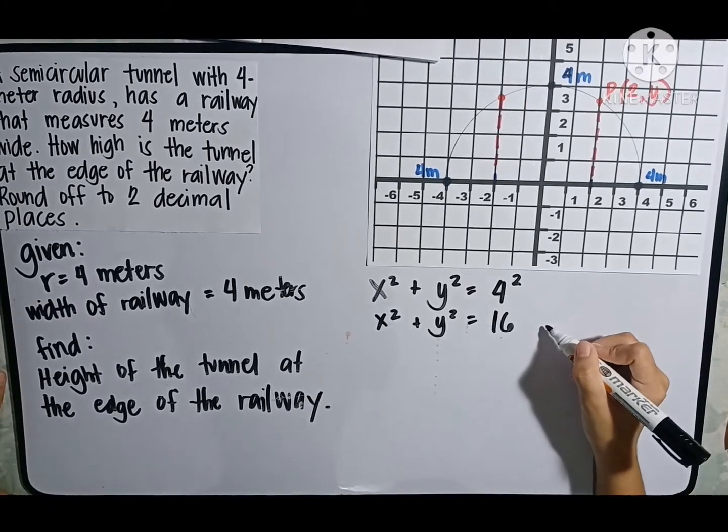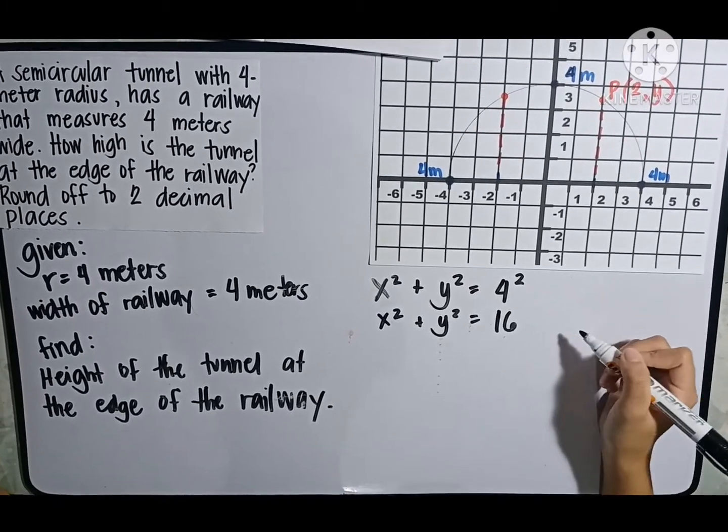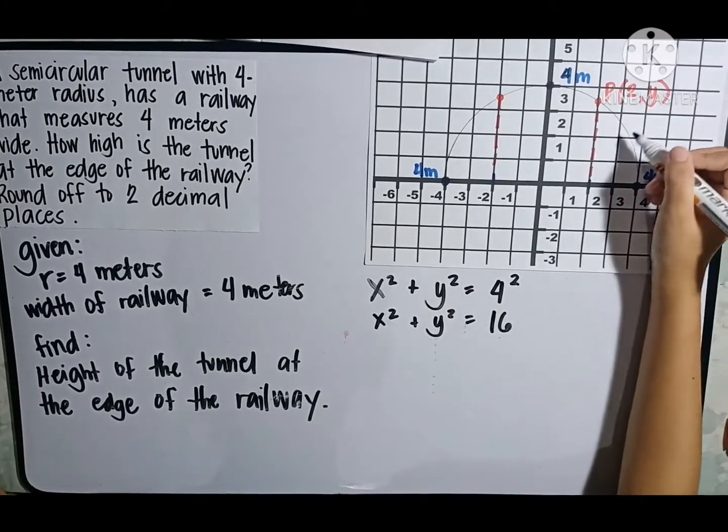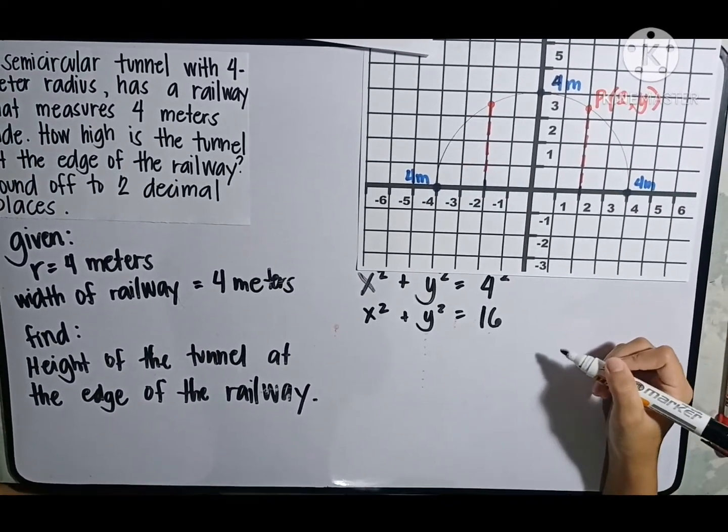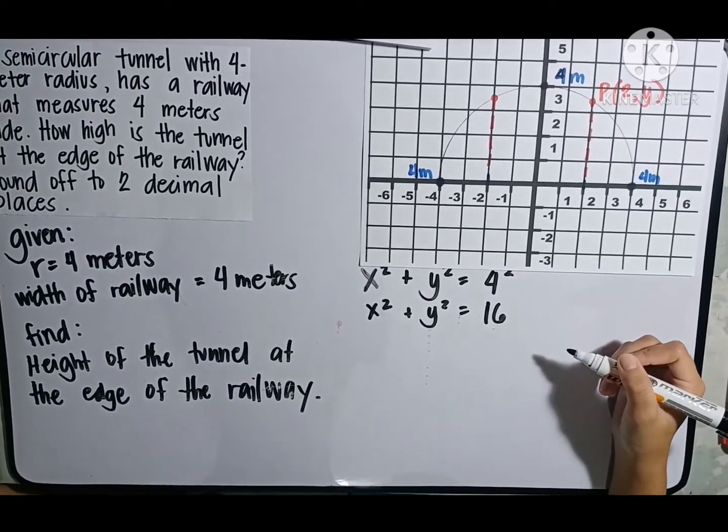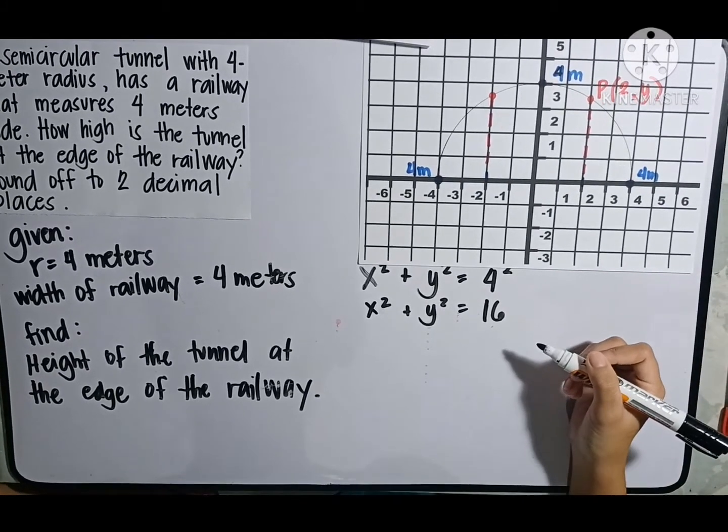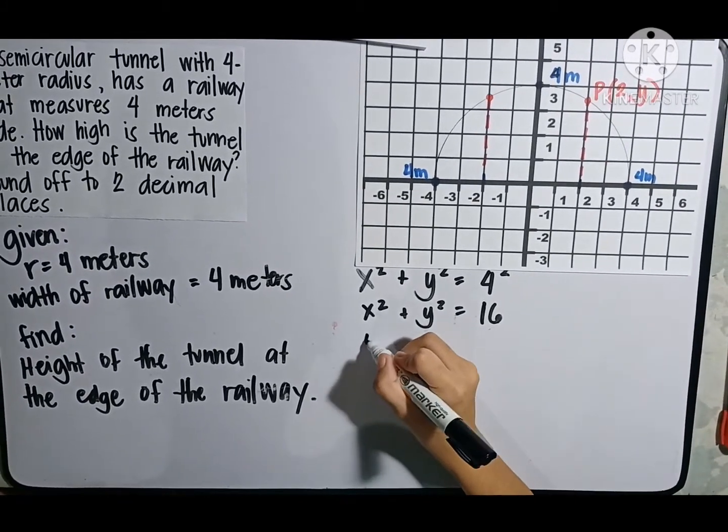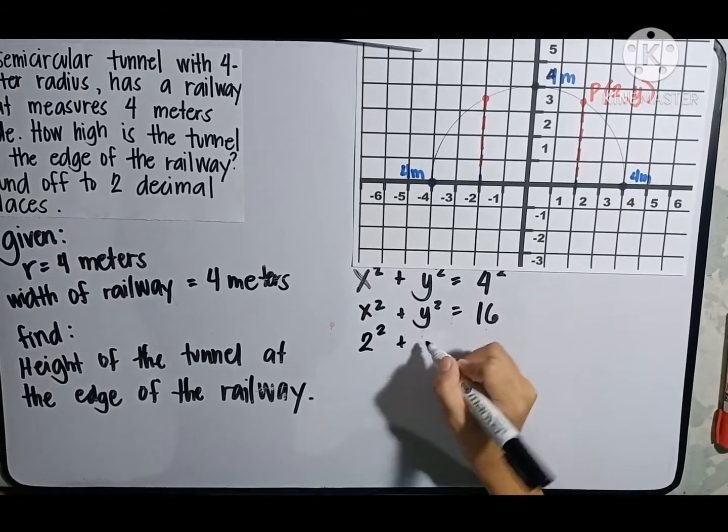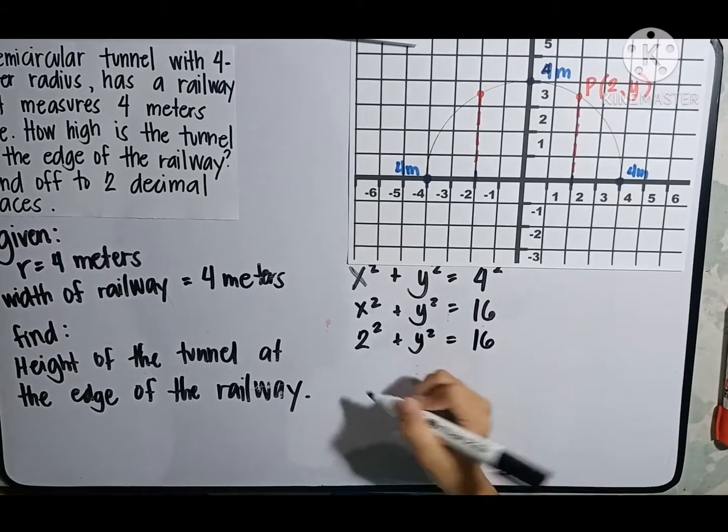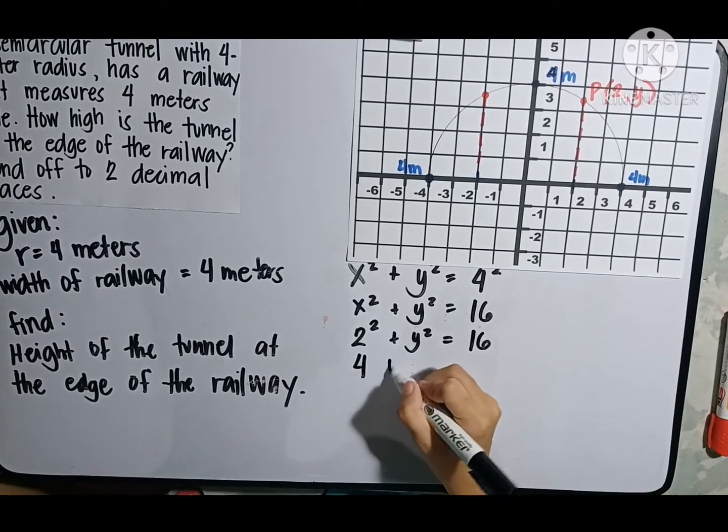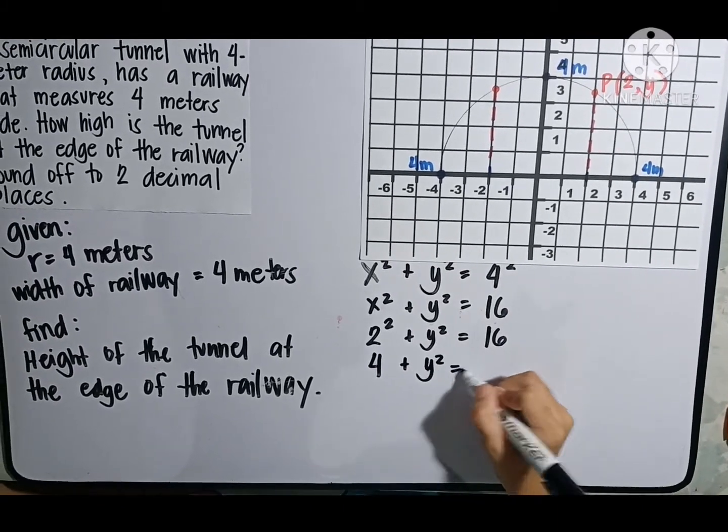This is our general equation at first, but we already have our point P which indicates the coordinates of 2, y. So, let us incorporate it in our equation. The value of x will be 2. So, 2 squared plus y squared is equal to 16. 2 squared is equal to 4 plus y squared is equal to 16.